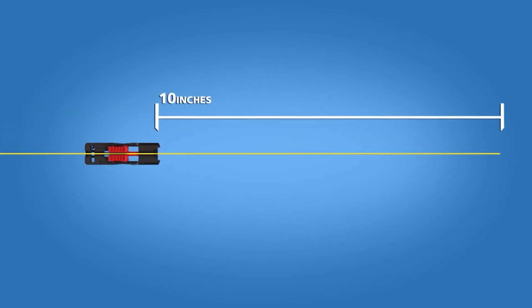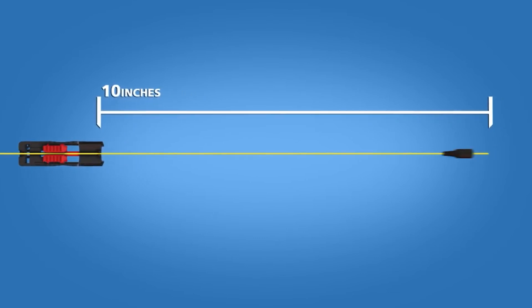For 900-micron terminations using the fan-out breakout kit, place the cable clamp onto the cable about 10 inches from the end, then place the 900-micron boot onto the cable.